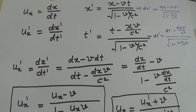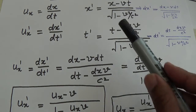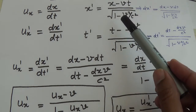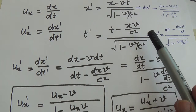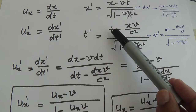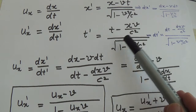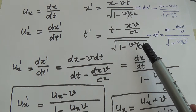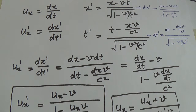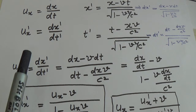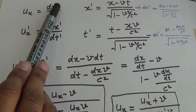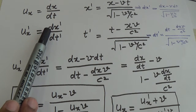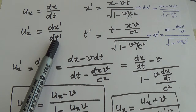From the Lorentz transformation we know that x prime is equal to x minus vt upon square root of 1 minus v squared upon c squared. And t prime is equal to t minus xv upon c squared upon square root of 1 minus v squared upon c squared. Here we have defined ux and ux prime, that is dx upon dt and dx prime upon dt prime.